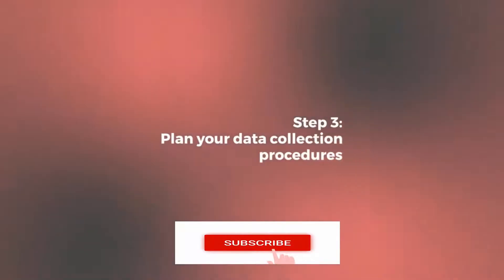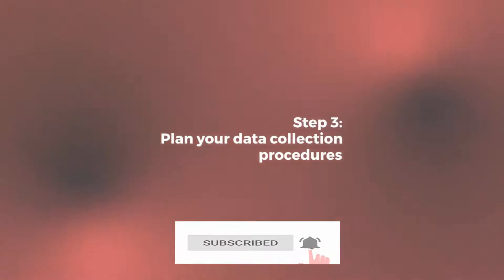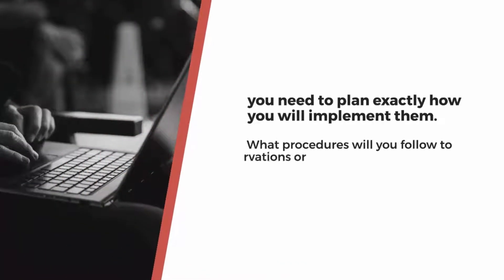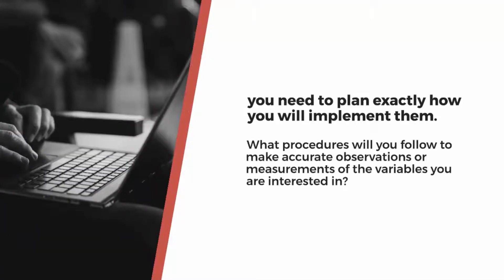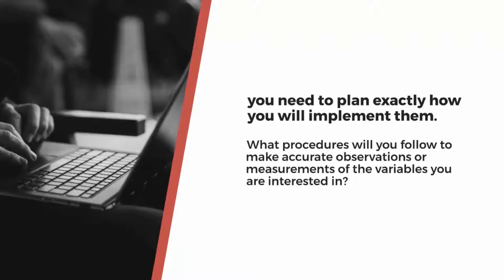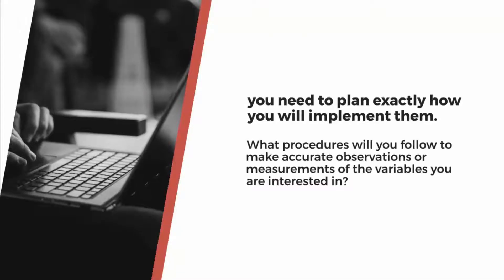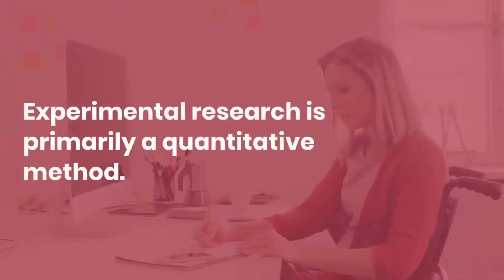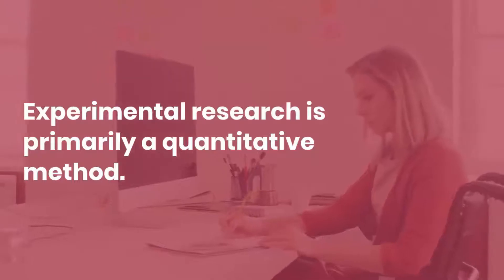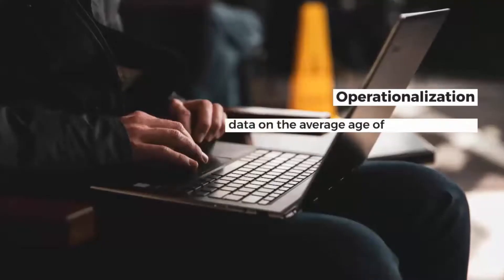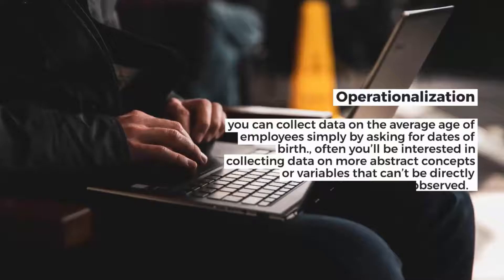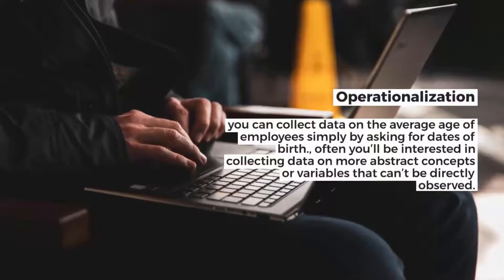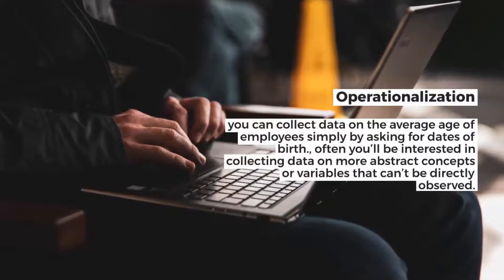Step 3: Plan your data collection procedures. When you know which methods you are using, you need to plan exactly how you will implement them. What procedures will you follow to make accurate observations or measurements of the variables you are interested in? For instance, if you're conducting surveys or interviews, decide what form the questions will take. If you're conducting an experiment, make decisions about your experimental design. 1. Operationalization — sometimes your variables can be measured directly. For example, you can collect data on the average age of employees simply by asking for dates of birth.